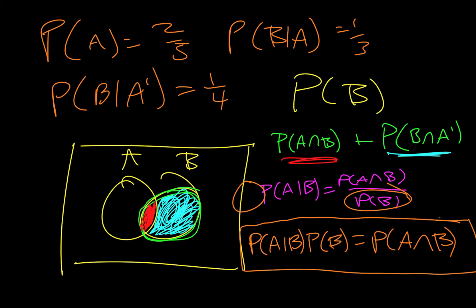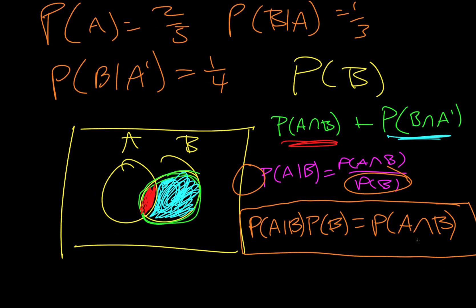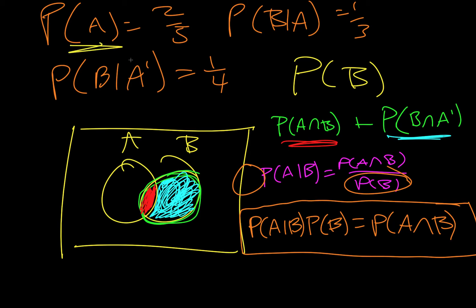Now the first thing is we're given A, so we're actually going to swap all of these. So we're going to say P of B given A times P of A is equal to the red section. And so P, we're given this first thing, it's one third, and then P of A is two fifths.